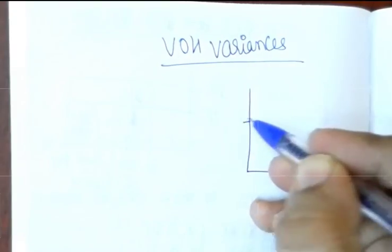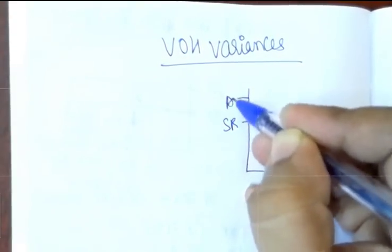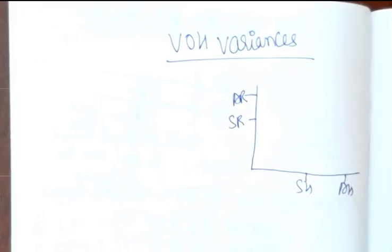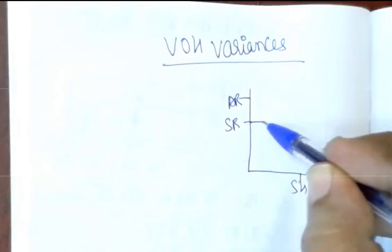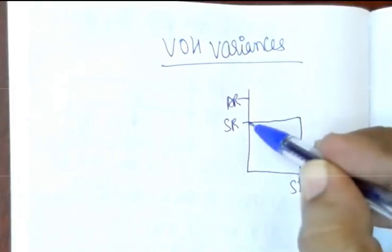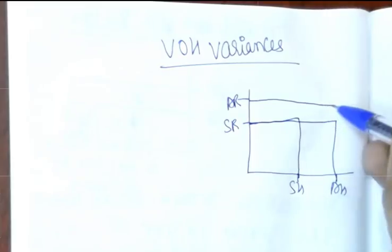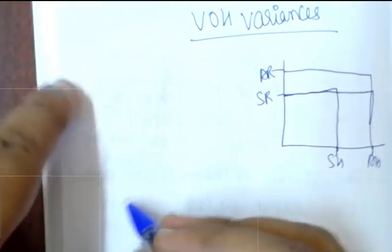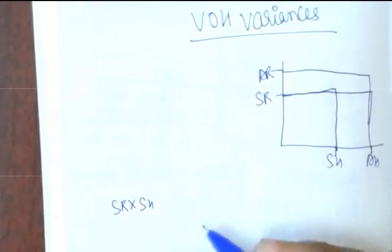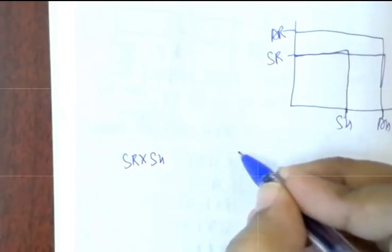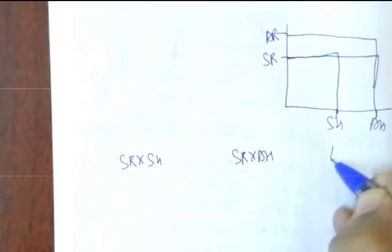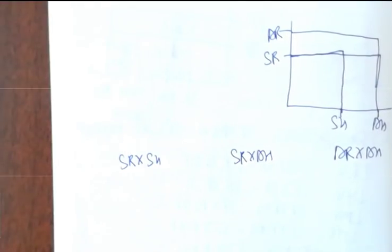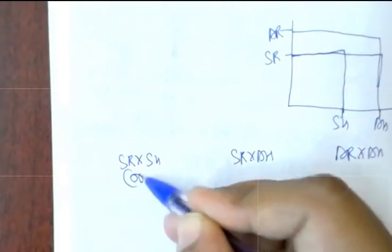Now coming to this calculation, let's look at the chart. The chart will have SR, AR, SH, AH. The computation table will be: SR × SH, SR × AH, AR × AH. There will be a few conversion factors I'll explain. The computation table is: standard rate × standard hours, standard rate × actual hours, and actual rate × actual hours.